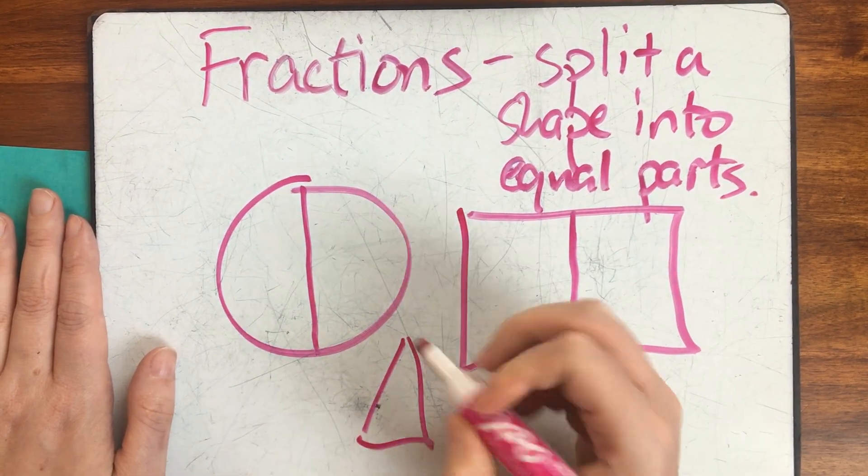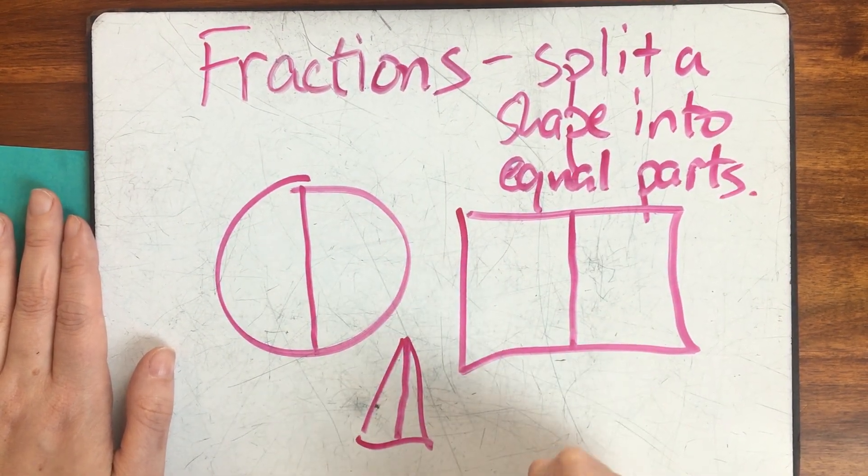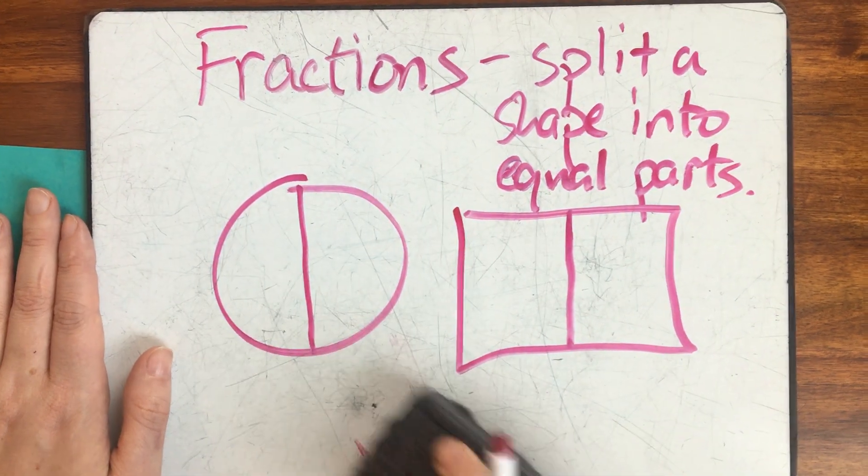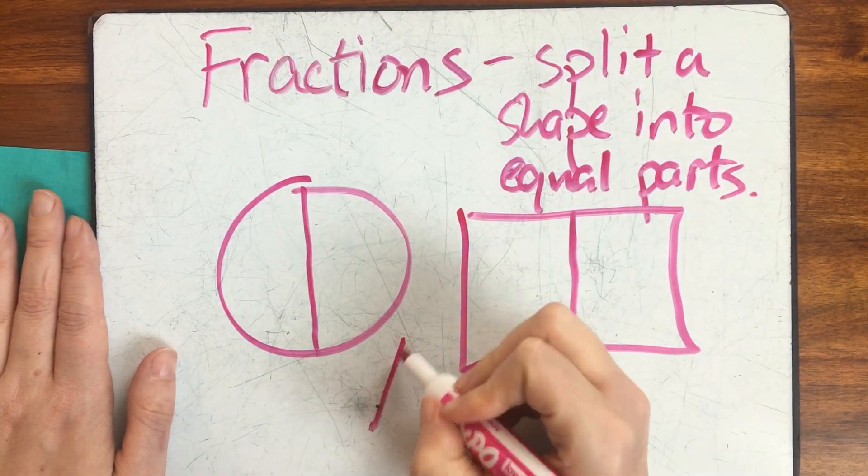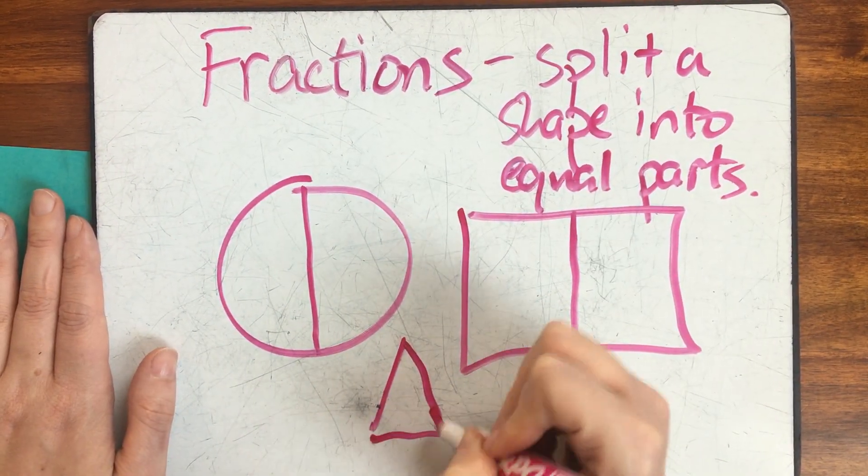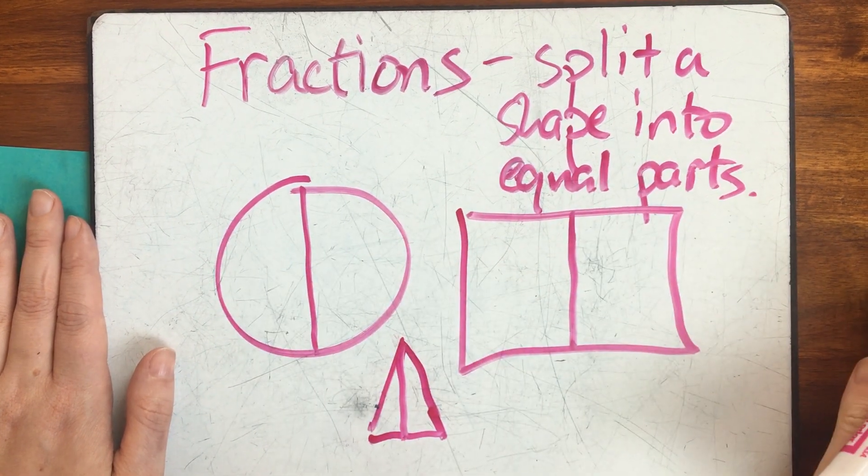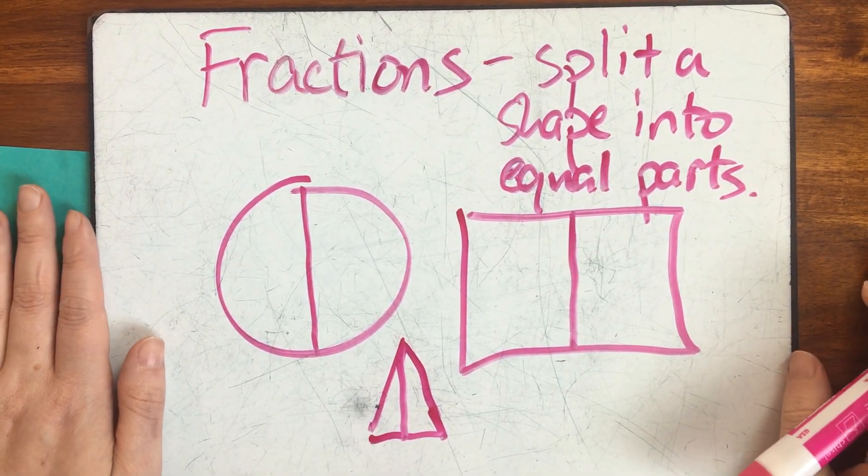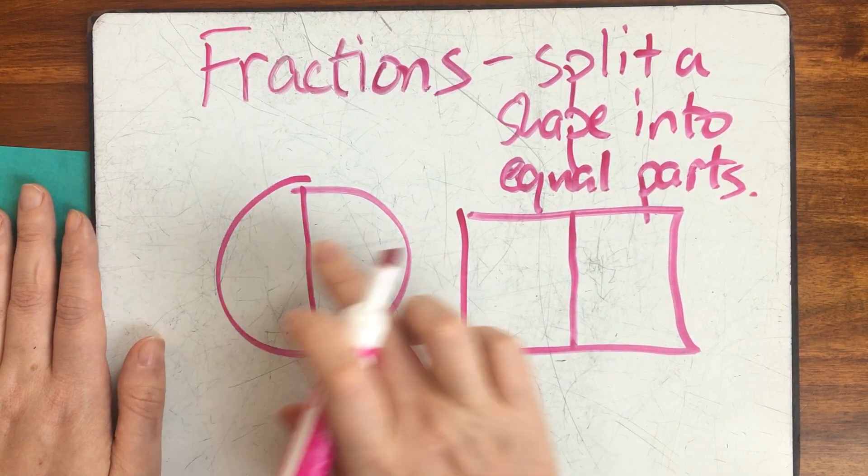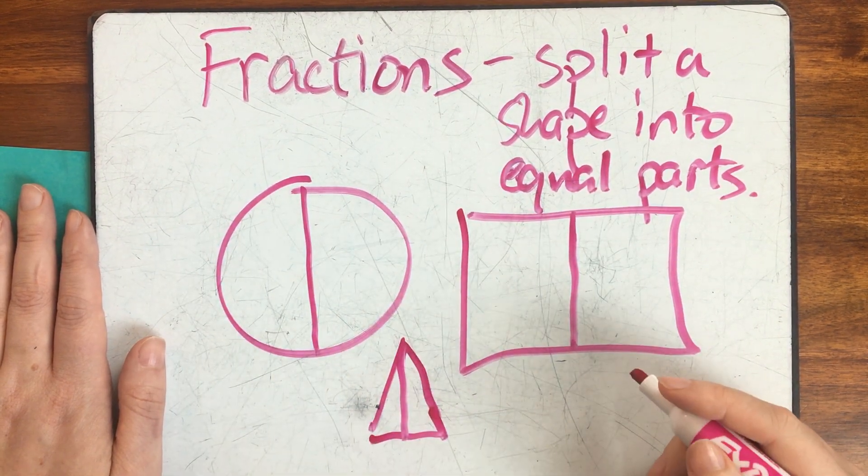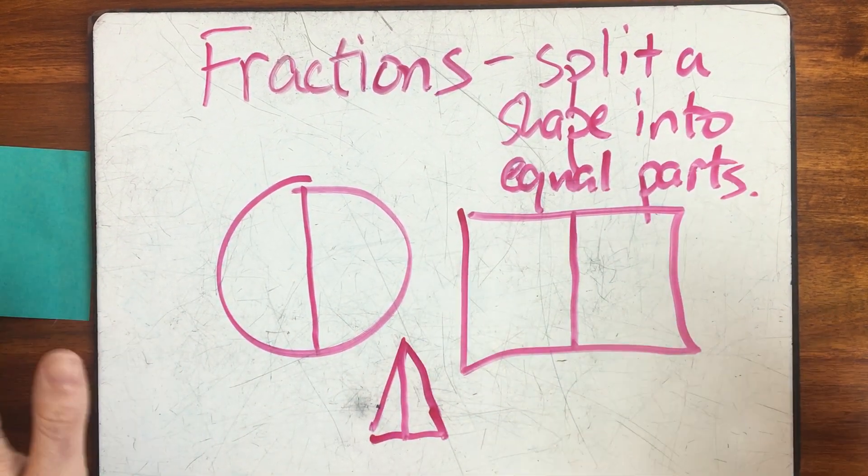Or I could split this triangle into equal parts. Let me redraw my triangle and make it a little bit neater. There. Now my triangle is split into equal parts as well. Each of these is split into two equal parts.